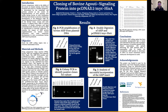The agouti signaling protein, or ASIP for short, is expressed in the bovine ovary, oocyte, and early embryo. However, the role of ASIP in reproduction is not currently known. To examine the impact of ASIP protein supplementation on bovine oocyte maturation and early embryonic development in vitro, recombinant bovine ASIP must be produced. The objective was to clone the ASIP coding region into a common mammalian vector.